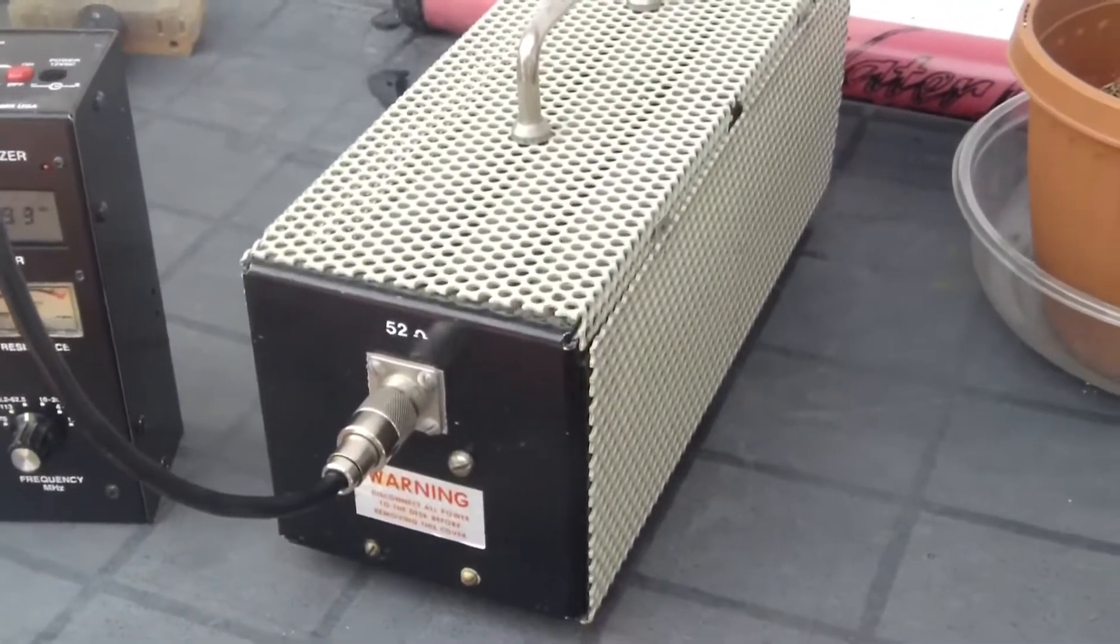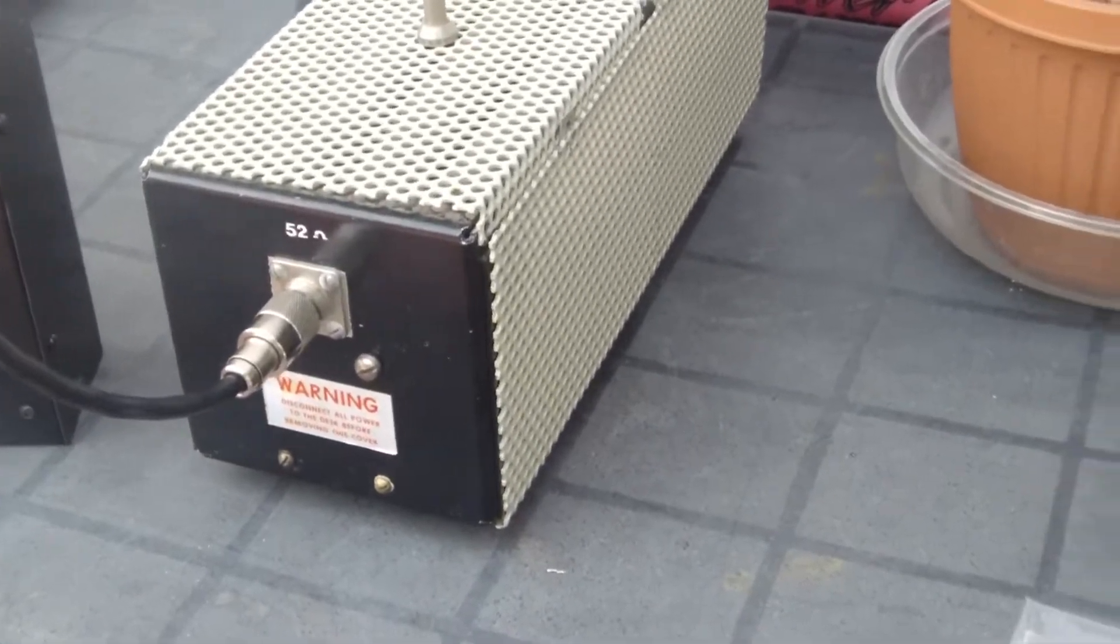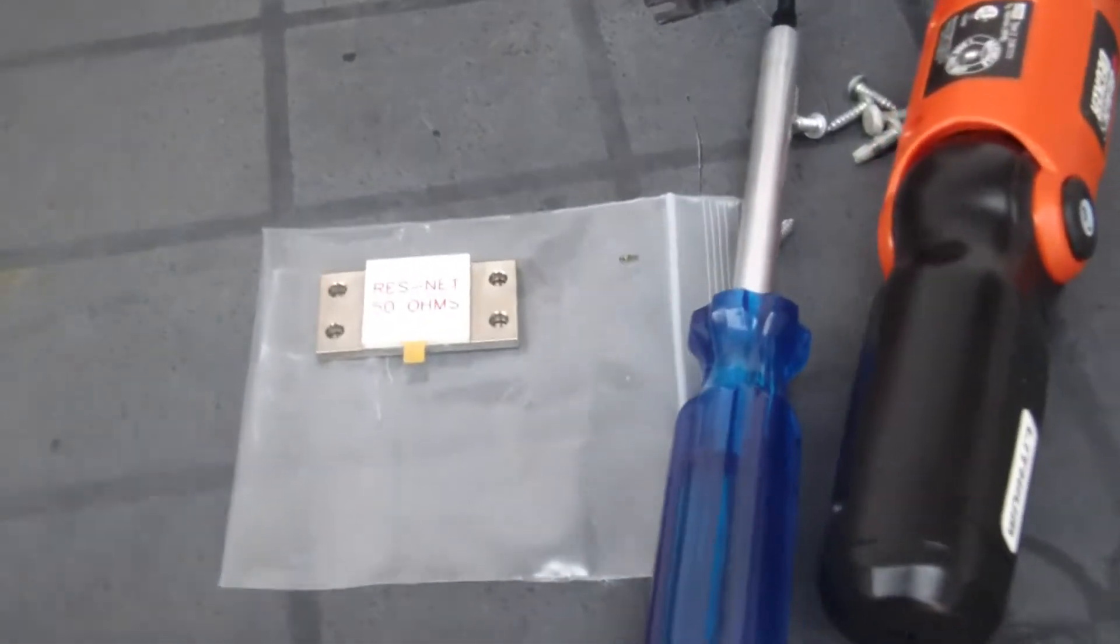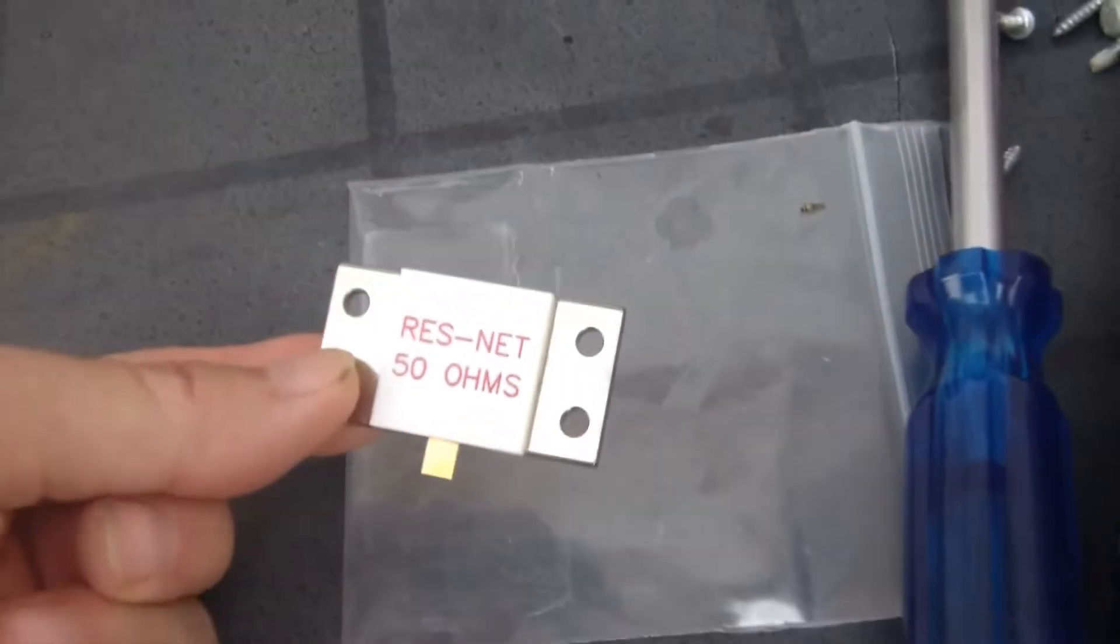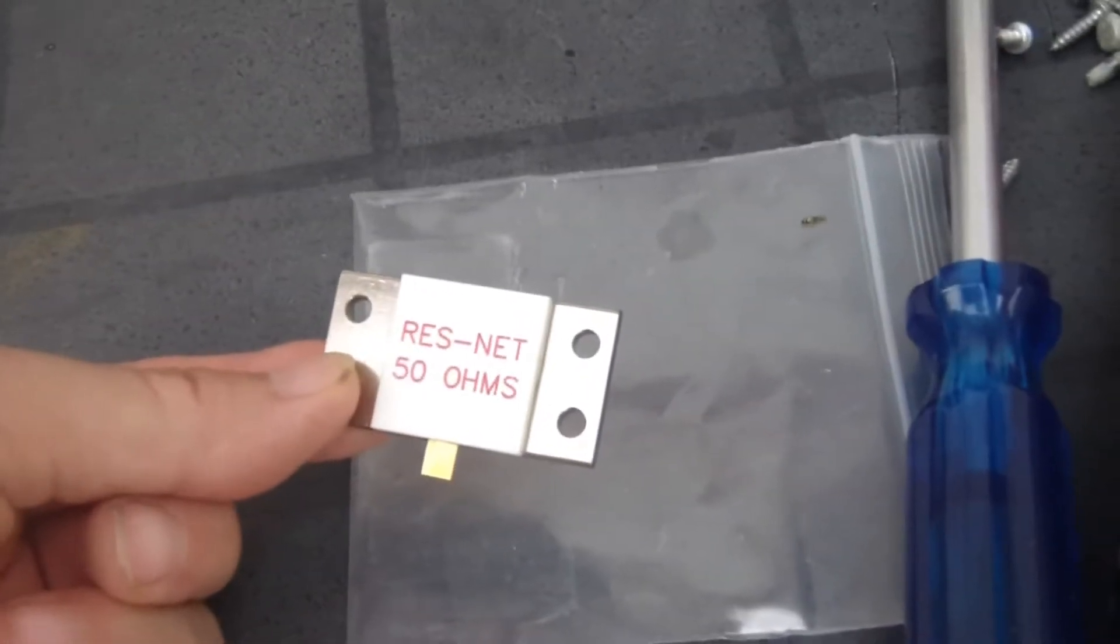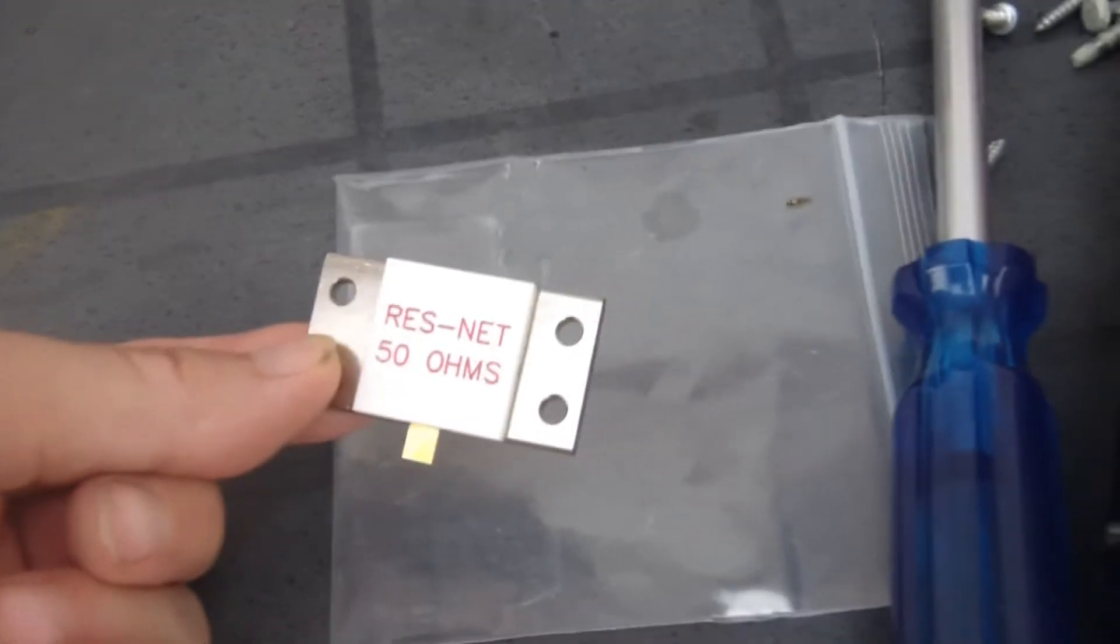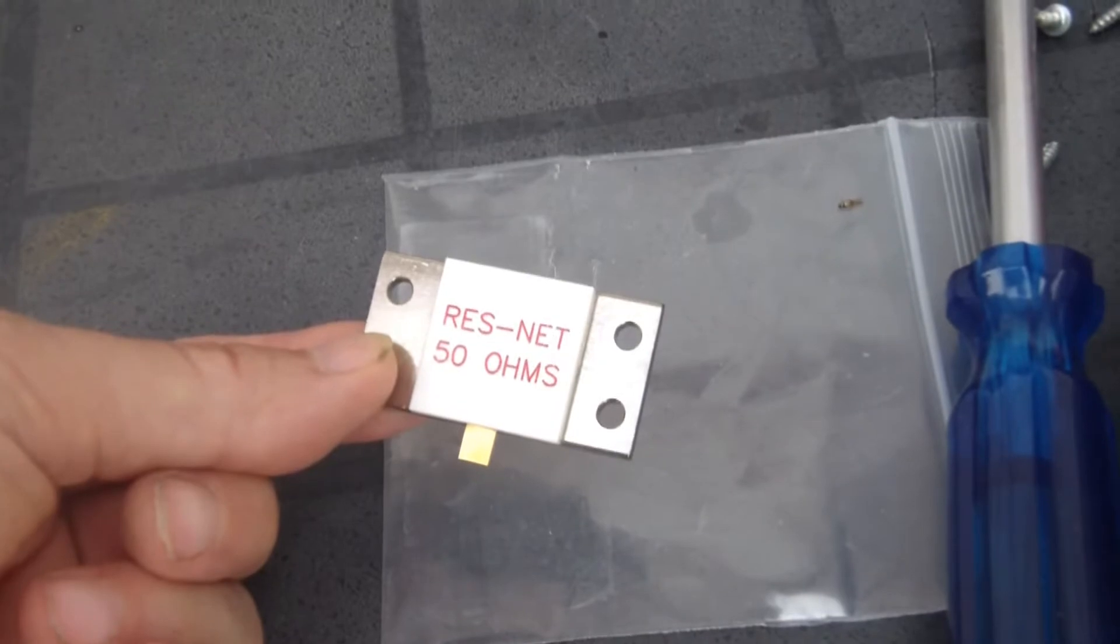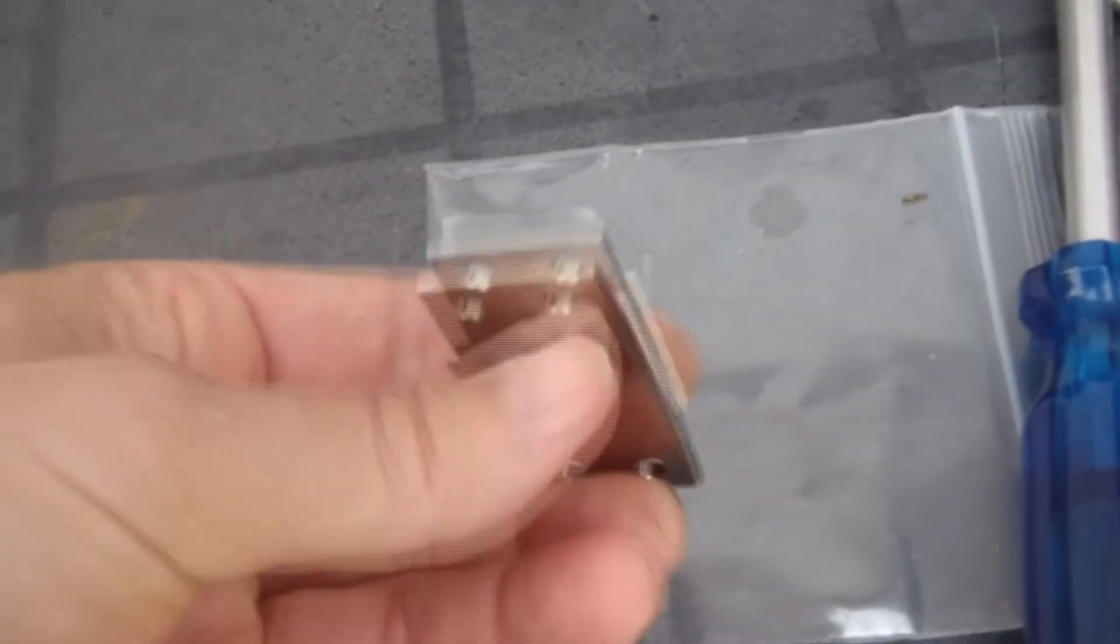But I can get over that. I can follow up on this other project that's been on hold for a while. This here is an 800 watt 50 ohm dummy load. Just need to hook it up to a good heat sink.